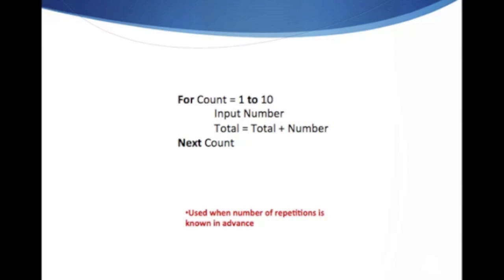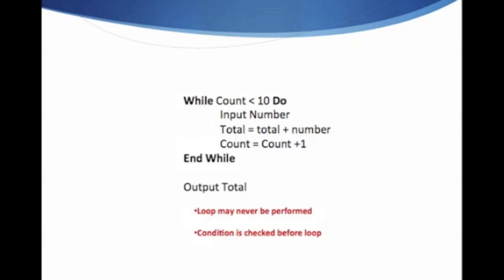The next loop you'll need to know is while-do-end-while. This loop may never be performed and the condition is checked before the loop. This might seem confusing, but don't worry, it's really easy. Here's an example incorporating the loop: while count is less than ten do, input number, total equals total plus number, count equals count plus one, end while, output total.